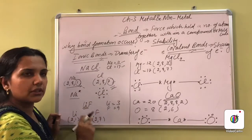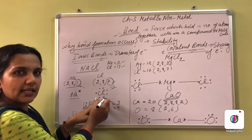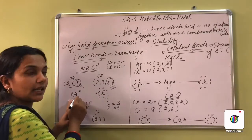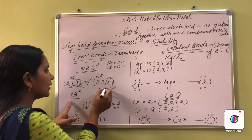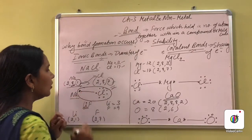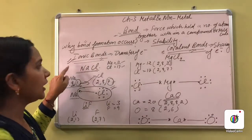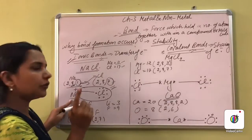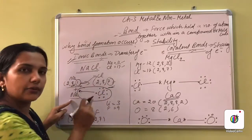When chlorine completes its octet of 8 electrons by receiving sodium's electron, bond formation occurs. This bond is said to be the ionic bond because total transfer of electrons takes place. Sodium gets a single positive charge because it donated one electron, and chlorine gets a single negative charge because it gained one electron.